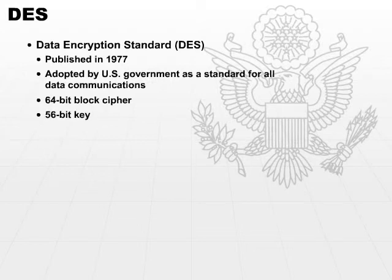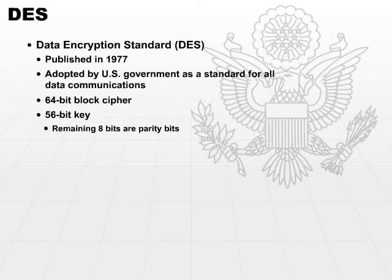Even though the key is a 56-bit key, it's expressed as a 64-bit data element. But always remember, this is a 56-bit key. The remaining 8 bits are used as parity bits to validate that the key is, in fact, a valid key. So if you see on your exam a question that asks what is the key length for DES — for the original DES — your answer should be 56-bit key.